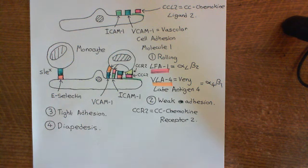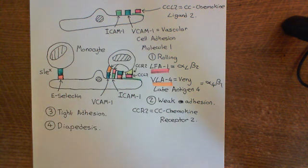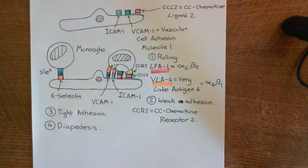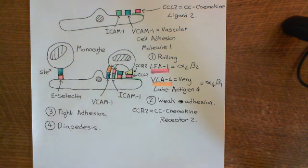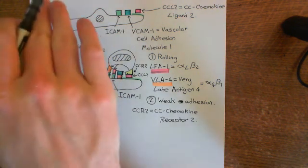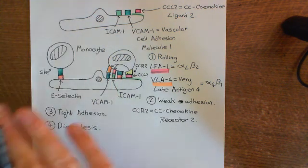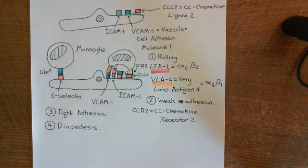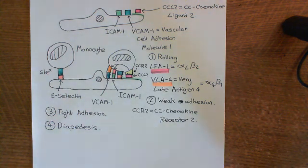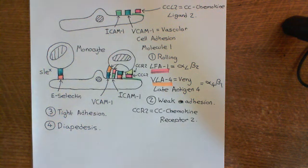This completes the acute inflammatory response. The adaptive immune system comes in much later — all of what we've described occurs within 24 hours, with some events happening within minutes. Within days, the adaptive immune response kicks in, which is also very powerful. The adaptive immune response will be discussed in a separate video.